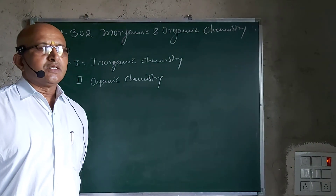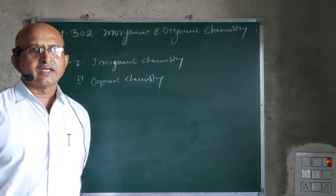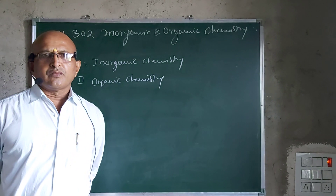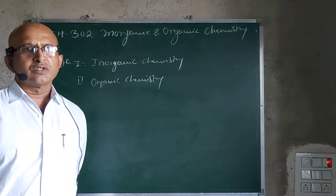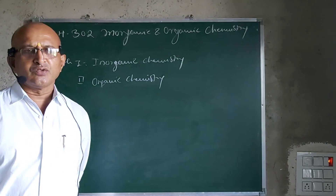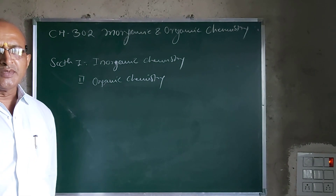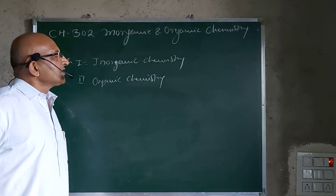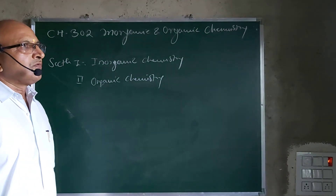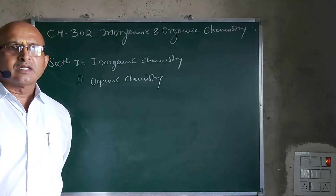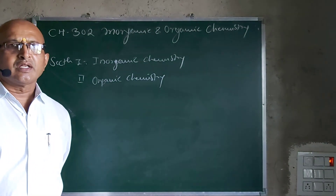So, in this academic year 2020-21, from last year you are facing the choice-based credit system, and this year this is your third and fourth semester that you are going to face. In the third semester, in Chemistry, we are going to have three subjects. The first is Physical and Analytical Chemistry. The second one is 302, that is Inorganic and Organic Chemistry.